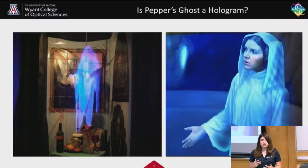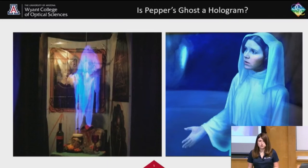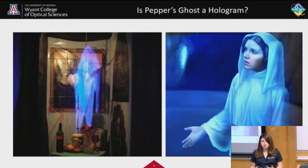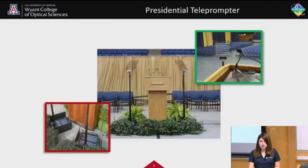Whereas a hologram, you actually use laser beams — two laser beams to shine on an object at different angles — and then you have some sort of holographic film that you record on. That makes the three-dimensional hologram that you may know from Star Wars, where Princess Leia communicates through a hologram. It's a different concept, but the cool thing about Pepper's Ghost, even though it's not quite a hologram, it still gives that illusion of something being there.